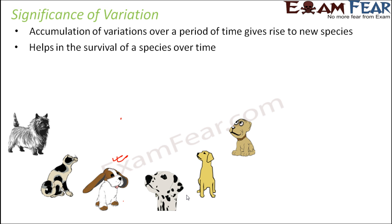Variation helps in the survival of a species over time. Sometimes the variation is for the betterment of the organism. For example, initially some dogs were prevalent but were not able to survive in extremely cold weather. A variation came in where the new variety of dog produced had a lot of fur all over its body. The presence of fur helped it survive in extremely cold conditions, so more and more dogs with fur started to be produced, helping them survive in extremely cold weather.